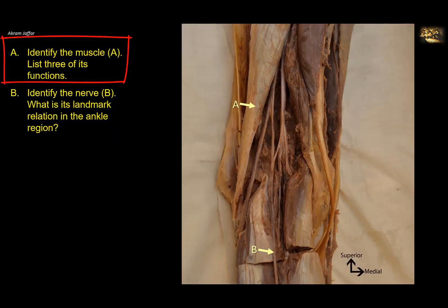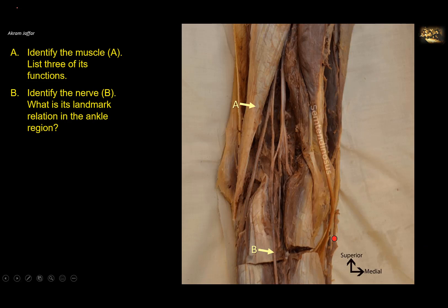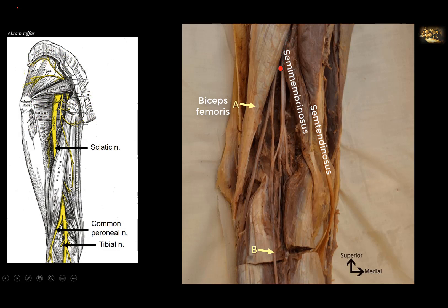Identify muscle A and list three of its functions. This is the popliteal fossa. You can see the superior and medial sides here. You can see the long tendon of the semitendinosus muscle and the semimembranosus deep to it, so this is the medial side. Here is the tendon of the biceps femoris muscle on the lateral side. Also, you can see that the sciatic nerve splits at the apex of the popliteal fossa, giving a branch to the lateral side — the common peroneal or common fibular nerve — which passes along the tendon of biceps femoris until it reaches the neck of the fibula. So the muscle A is the biceps femoris.